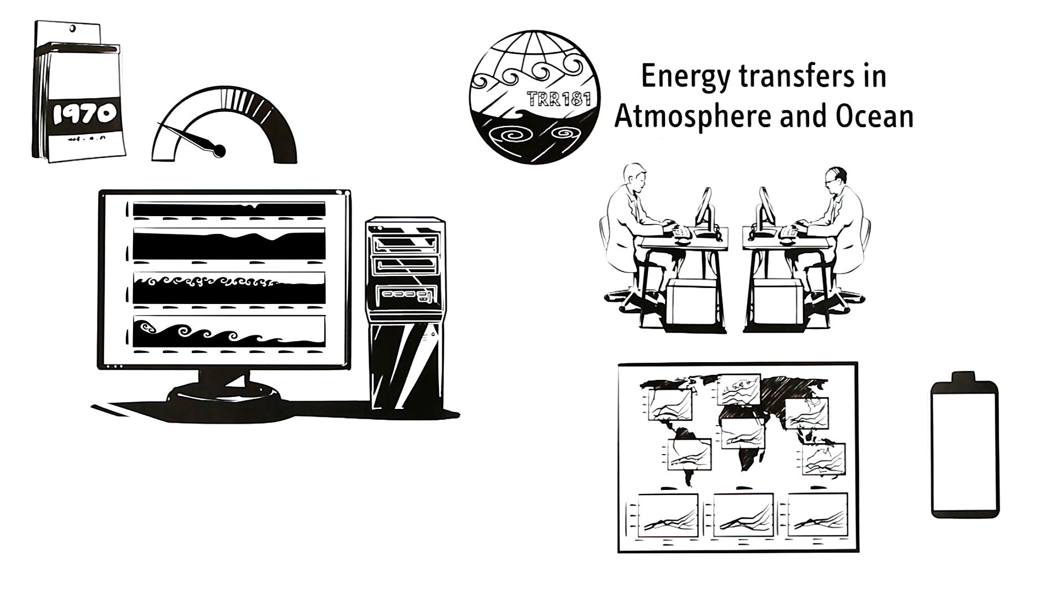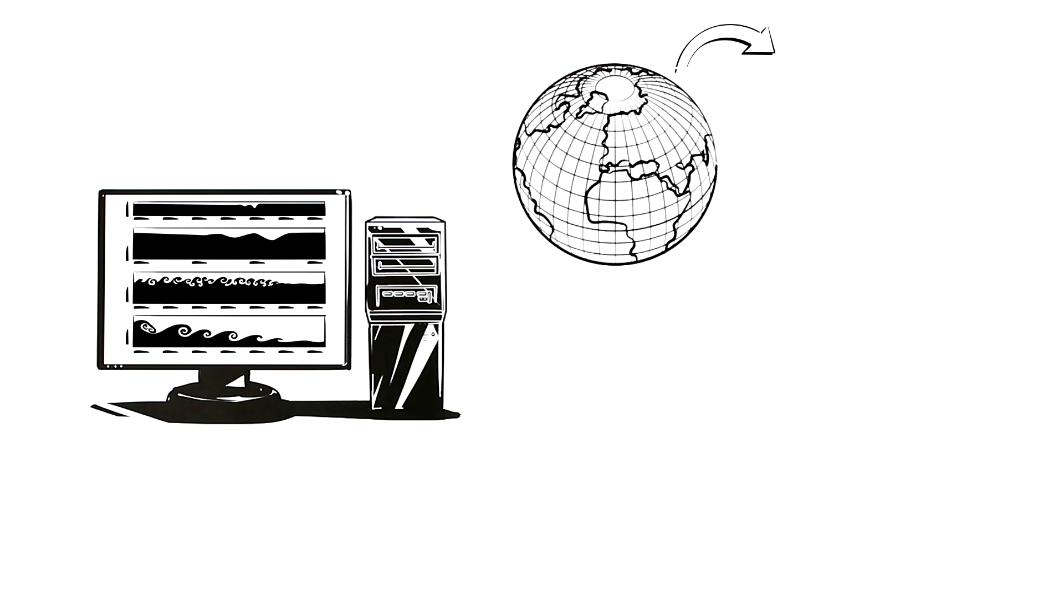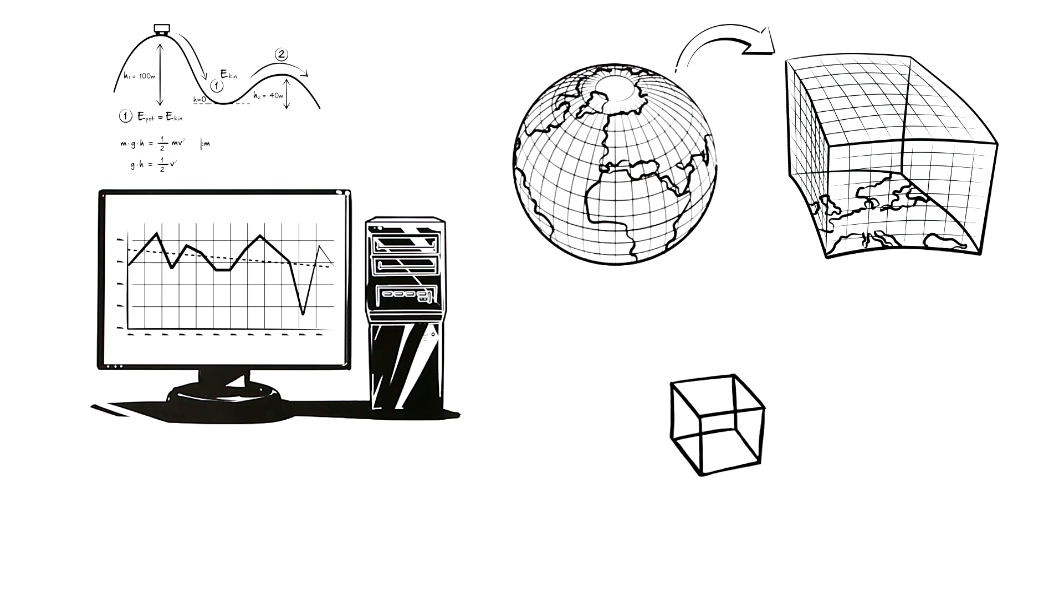In climate models, the researchers horizontally and vertically split the atmosphere into cubes. For each cube, the discrete equations are used to advance quantities like temperature step by step.